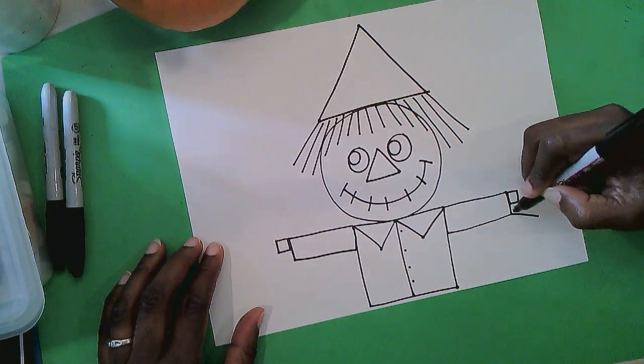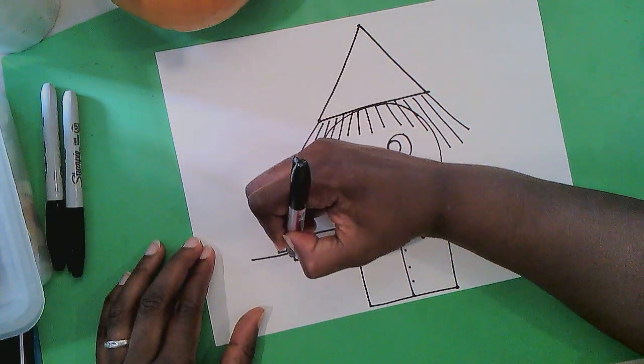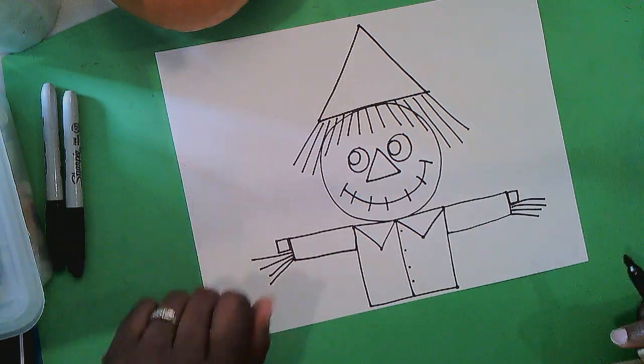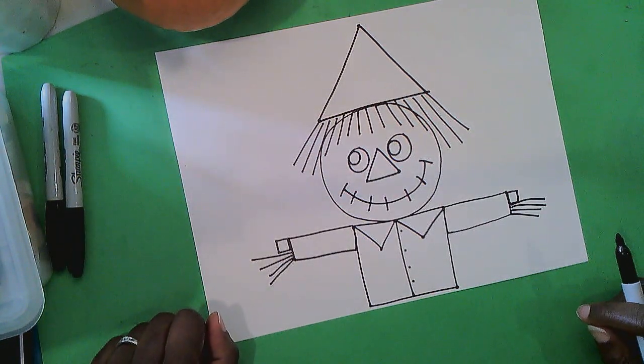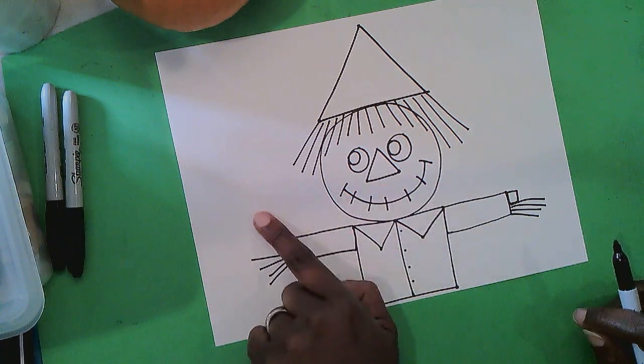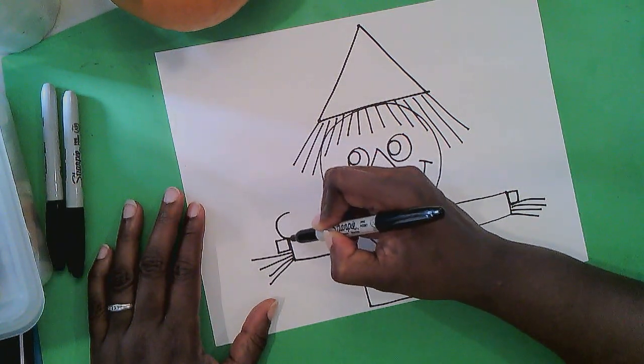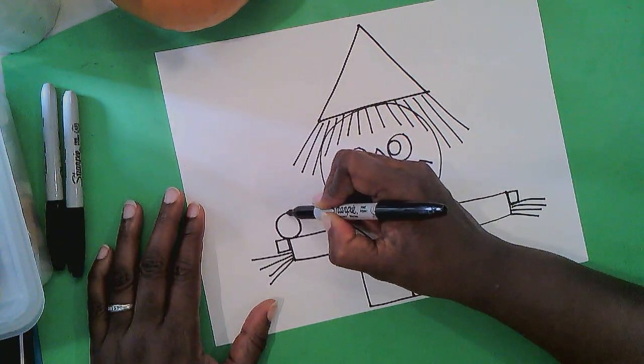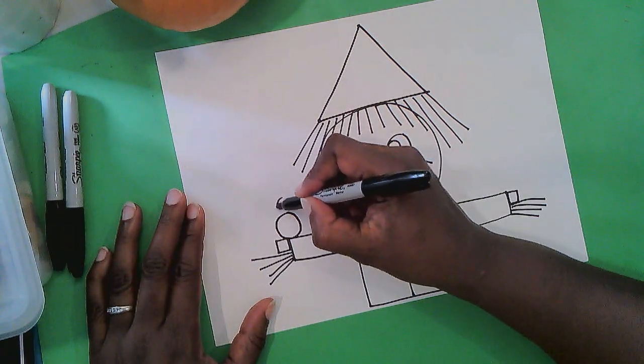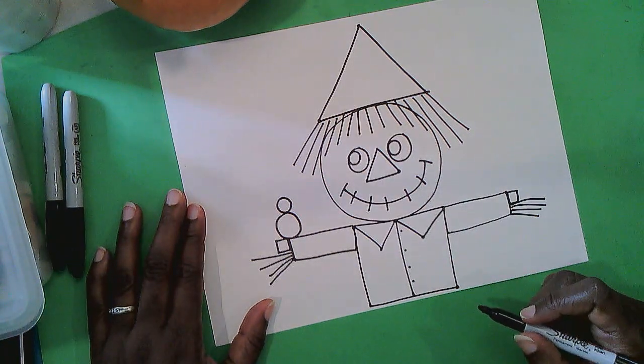Oh and there's straw coming out of the sleeve. So add straw on the right and the left. Left. Okay. Well our friend the scarecrow is looking to the left because someone has come to say hello. Someone who is supposed to be afraid of the scarecrow.